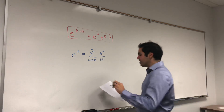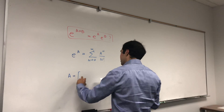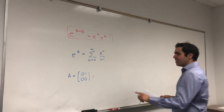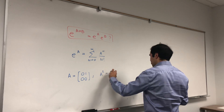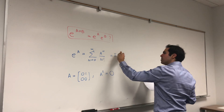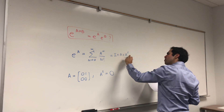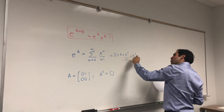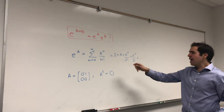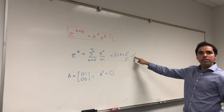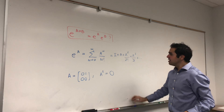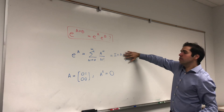Let's take the following two matrices. A is [[0,1],[0,0]]. If you calculate this, A squared is just the zero matrix. So what this expression becomes — remember this is I plus A plus A squared over 2 factorial plus A cubed over 3 factorial plus dot dot dot — because A squared is the zero matrix, A cubed will also be the zero matrix, A to the fourth will be the zero matrix, et cetera. So the exponential just becomes I plus A.